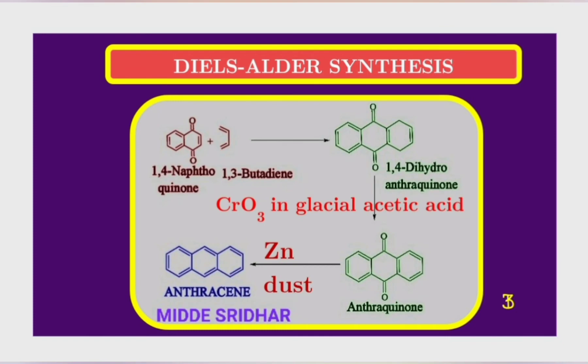Now we discuss about Diels-Alder synthesis, which is carried out in three steps. In the first step, 1,4-naphthoquinone is allowed to react with 1,3-butadiene and an addition product 1,4-dihydroanthraquinone is obtained. In the second step, 1,4-dihydroanthraquinone is oxidized with chromic acid and 1,4-anthraquinone is obtained.